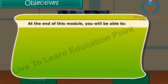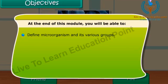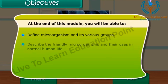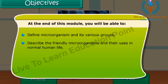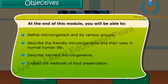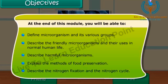Friends, at the end of this module, you will be able to define microorganism and its various groups. You will also be able to describe the friendly microorganisms and their uses in normal human life. Besides, you will be able to describe harmful microorganisms and explain the methods of food preservation. In addition, you will also be able to describe nitrogen fixation and the nitrogen cycle.